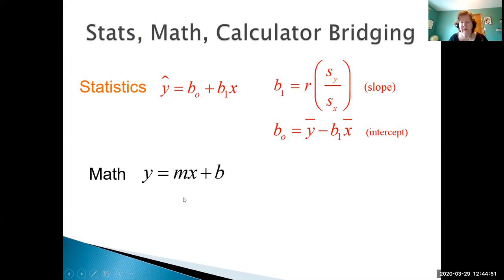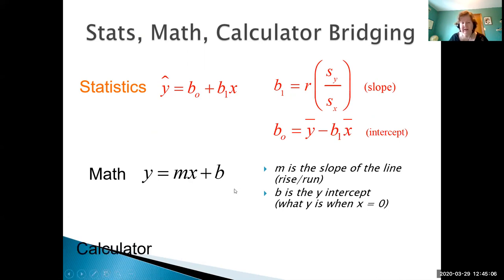In math you might be more familiar with the format of a straight line, y equals mx plus b, where m is the slope of the line or rise over run, and b is the y-intercept, meaning what is the value of y when x is zero. Calculators also use different notation: y equals a plus bx, and this time b is the slope of the line and a is the y-intercept. This is only introduced to show you that calculator manufacturers use one notation, our math textbooks use a different notation, and then statistics keeps this b0 notation.